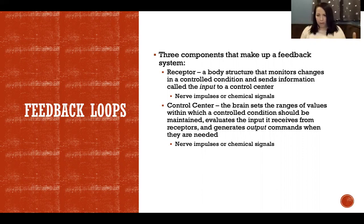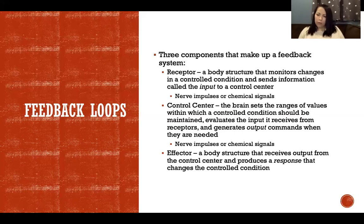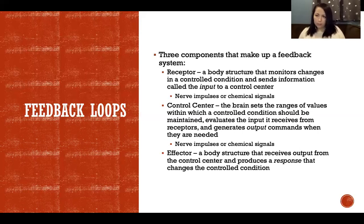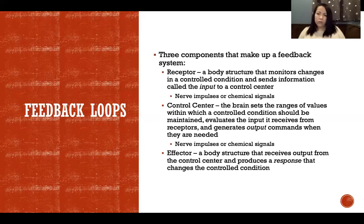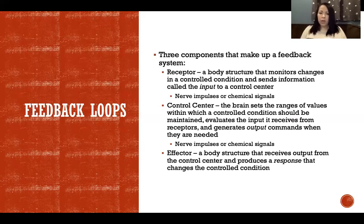The brain then sends output — a plan — to the effectors of the body. Effectors are body structures that receive the output from the control center and produce a response to cause the change the brain decided we need. The effectors are always muscles or glands: skeletal muscle, cardiac muscle, smooth muscle, endocrine glands, or exocrine glands. Those are the things in the body capable of responding to the brain's commands to cause a change and keep us inside our homeostatic range.